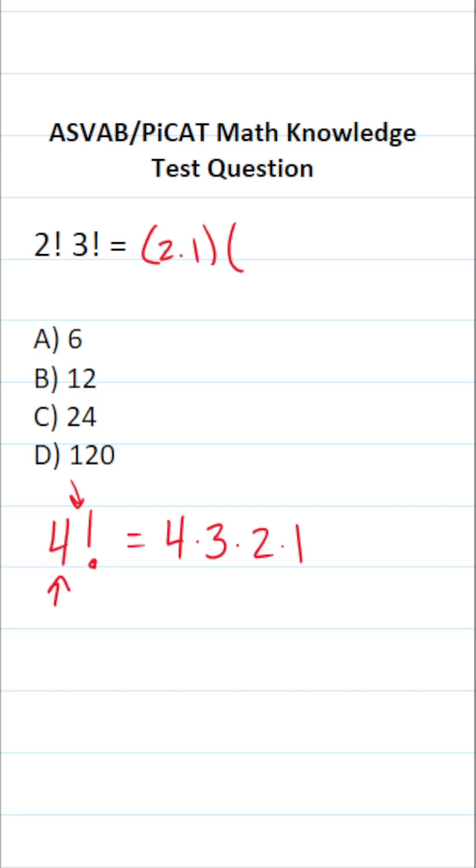What is 3 factorial? It's 3 times 2 times 1. And I put these in parentheses because it makes it very easy to work out.